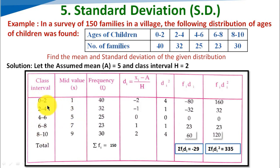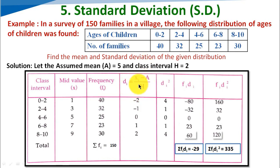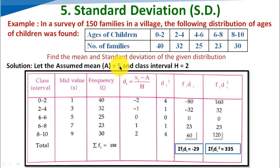We write down the frequencies: 40, 32, 25, 23, 30. The sigma of fi, the summation of all frequencies, equals 150 total families. Now we find Di = (xi minus assumed mean) divided by h. So for the first value: 1 minus 5 divided by 2 gives minus 4 divided by 2, which is minus 2. Calculating for all values gives: minus 2, minus 1, 0, 1, 2.